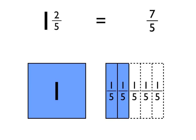What I've done here is I've represented the mixed number, the 1 and 2 fifths, using this diagram. I've coloured in one whole blue square to represent the whole number in the mixed number, the 1. And the 2 fifths — I've taken a second square.